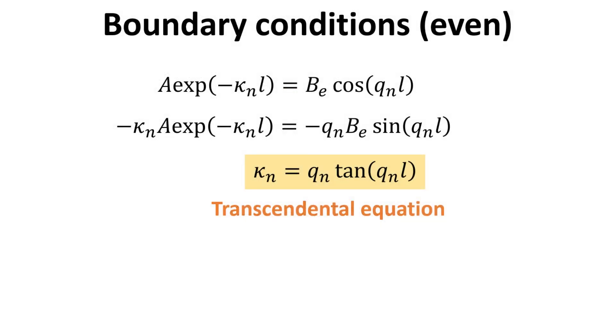Collecting the two boundary conditions and dividing one with the other, we then arrive at an equation relating the variable κ to q. This is a so-called transcendental equation which has to be solved numerically. We shall solve this after we derive the counterpart equation for the odd solutions.